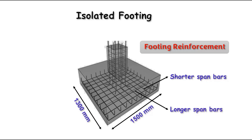Before starting the calculation, let us look at the reinforcement details of the shorter span and longer span, as this creates lots of confusion when calculating quantities. Our main aim is to calculate the weight of the steel reinforcement. We have reinforcement in the longer direction and the shorter direction, so we need to find out the number of bars and the length of each bar.